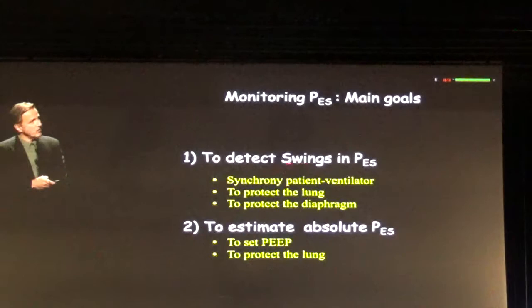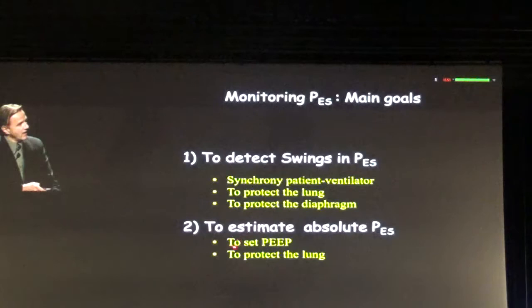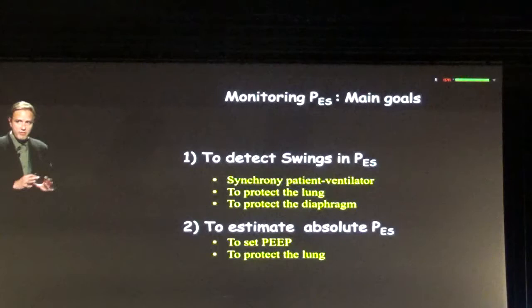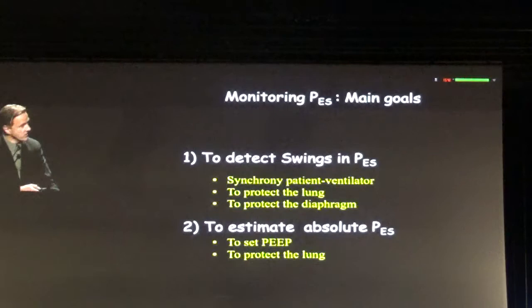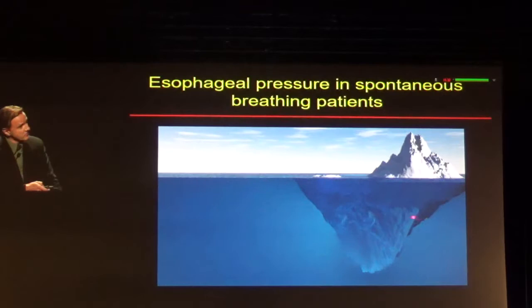All these speakers talked about the goals when using the esophageal balloon: to detect swings or to estimate absolute esophageal pressure. Here we are interested in synchrony and estimating muscle effort. When we measure absolute pleural pressure, we are typically interested in setting PEEP and trying to keep the lung in a good situation — not too much collapse, not too much overdistension. When measuring the swings in pleural pressure, we are typically interested in the problem of underestimating muscle effort.